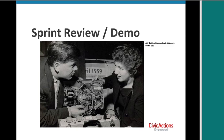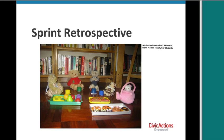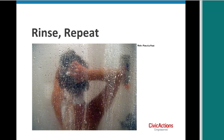Also at the end of the sprint, the team gets together and talks about how their work went — usually just the team, to have a safe space for honest evaluation. A common format is: what went well during the sprint, what didn't go as well, and what would we like to try differently next time? Then you do it all again — deliver your potentially shippable product, go back to the product backlog, take the highest-prioritized items off the top of the list, and repeat the whole process.